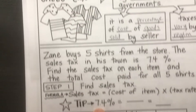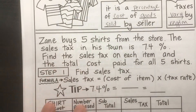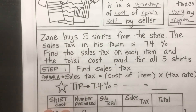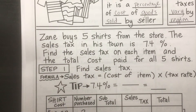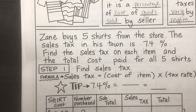Let's look down here. Zane buys five shirts from the store. The sales tax in his town is 7.4%. Find the sales tax on each item and the total cost paid for all five shirts.